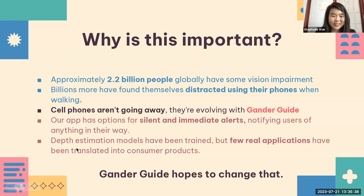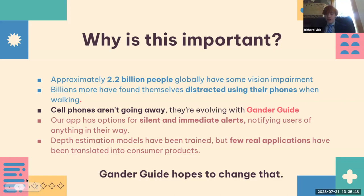Our app has options for silent and immediate alerts, which notify users of anything that may block their way. Path estimation models have been trained, but few real applications have been turned into consumer products. Gander Guide hopes to change this.